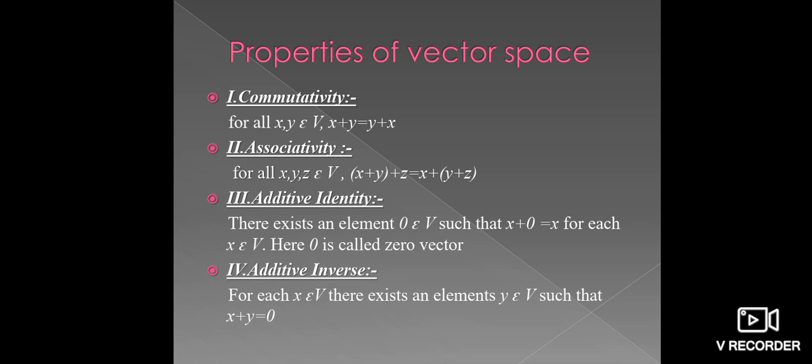Additive inverse. It means, take a vector X belongs to the vector space V, then there exists an element Y belongs to V, such that X plus Y equals 0.